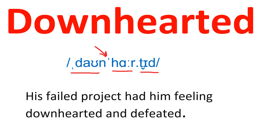Downhearted. It's a three-syllable word and the stress is on the second syllable — 'heart.' Downhearted. The T sound at the end is not a very strong T; it's more like a D sound, so it's 'downhearted.' Example sentence: His failed project had him feeling downhearted and defeated.